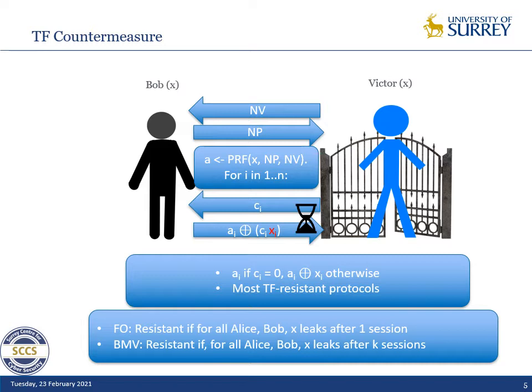So basically, if Bob helps Alice once, then he is forced to give his secret key. On the other hand, we have the BMV model in which the protocol is resistant if for all Alice and Bob, X leaks after K sessions, where K is not necessarily one. So BMV covers more attacks because it allows more freedom for Alice.